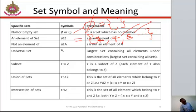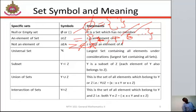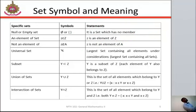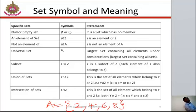Now, we say 'not an element of the set,' represented with this symbol. From the example of even numbers: here is a set of even numbers — 2, 4, 6, 8, and so on. Then we can say 5 is not an element of set A, as 5 is not an element of the even numbers.